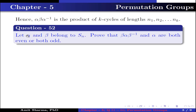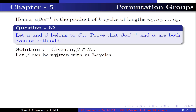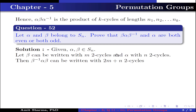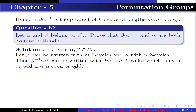Question number 15. Let alpha and beta belong to Sn; prove that beta alpha beta-inverse and alpha are both even or both odd. Given alpha, beta belong to Sn. Let beta be written as m 2-cycles and alpha with n 2-cycles. Then beta-inverse alpha beta can be written with 2m + n 2-cycles, which is even or odd whenever alpha is even or odd.